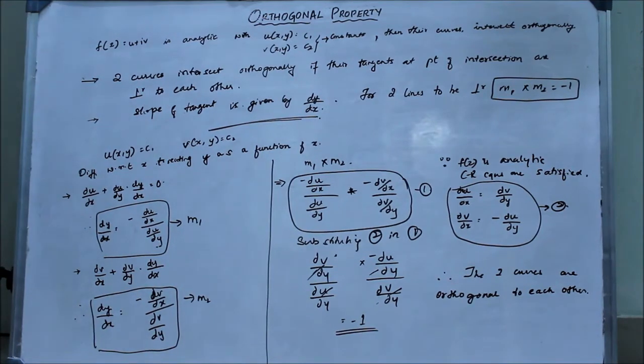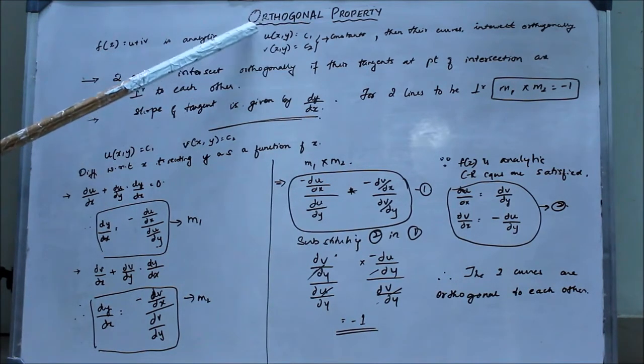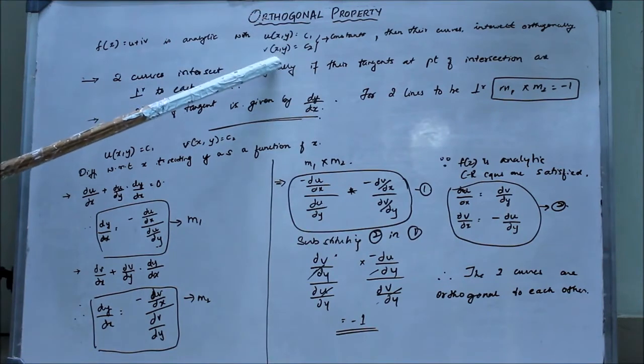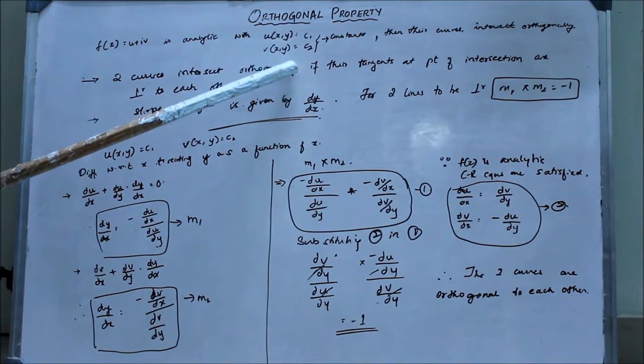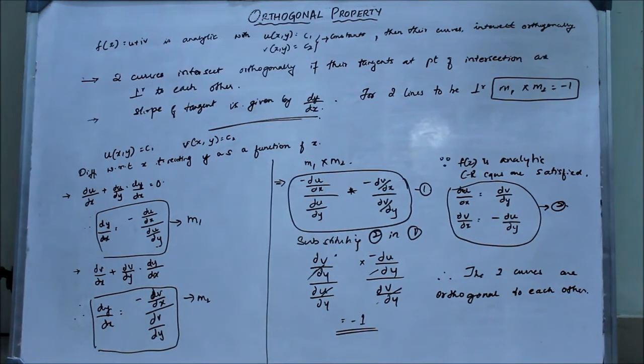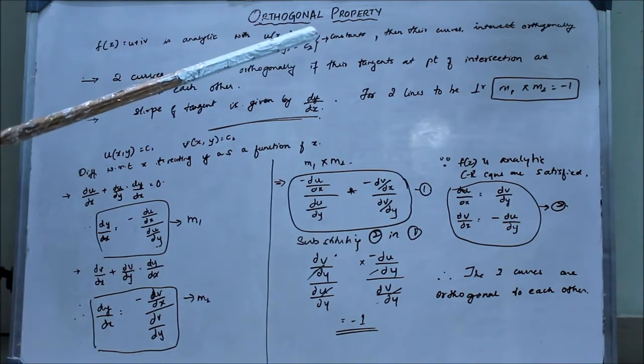Here if we look at the whiteboard, Fz is an analytic complex function. Fz equals u plus iv, where u dependent upon x and y equals constant c1, and v dependent upon x and y is denoted by c2. These two are constants.